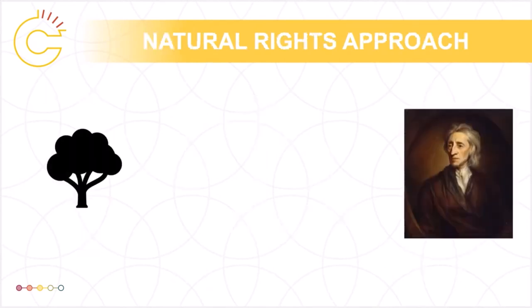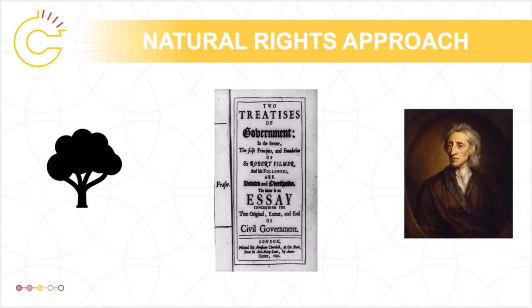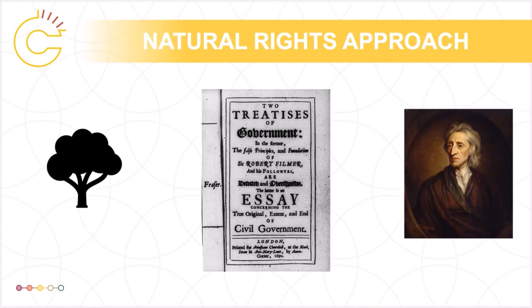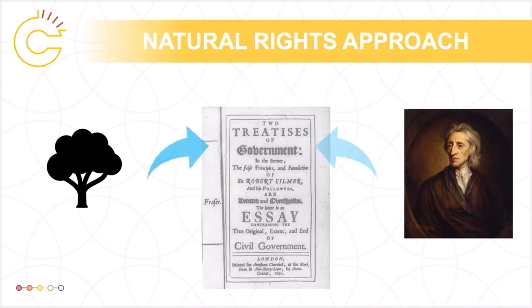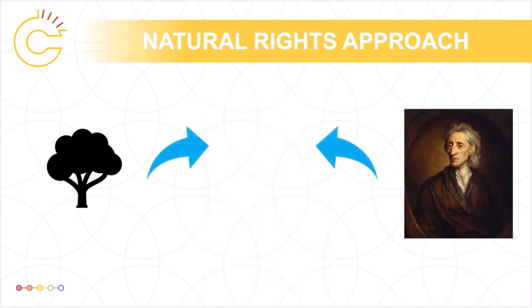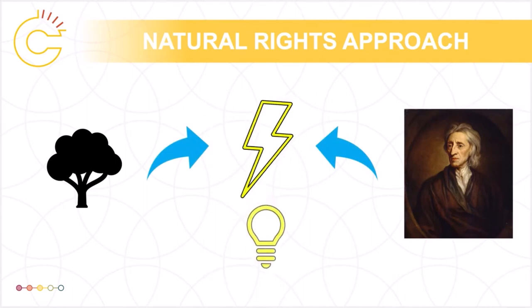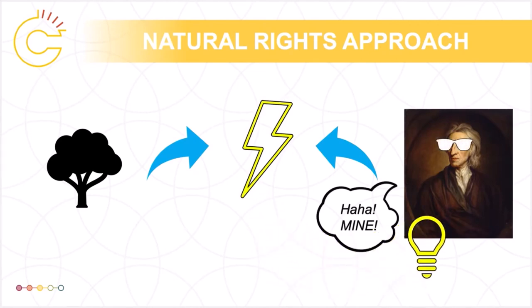The natural rights-based approach to copyright is drawn from the work of John Locke, specifically from his writings on the subject of common property in Two Treatises of Government, which have been extended to intellectual property. The Lockean justification is premised on the idea that when an individual mixes their own labor with something from nature, the result becomes the property of that individual.